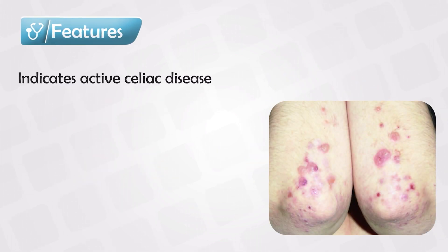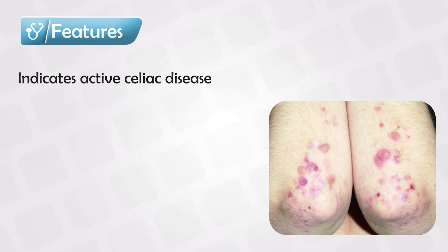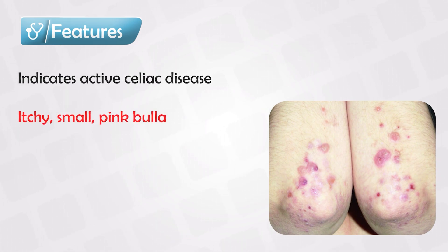Dermatitis herpetiformis is commonly seen in celiac disease, and it indicates an active condition. These lesions affect the elbows, the knees, and the buttocks. They appear as fluid-filled sacs that are very small, resembling vesicles or bulla.